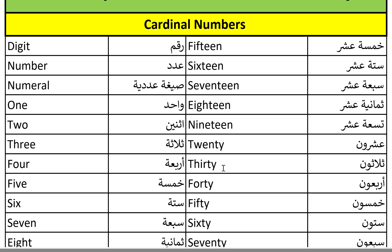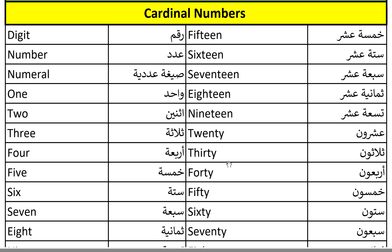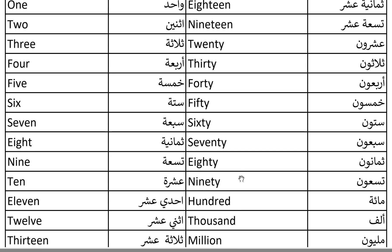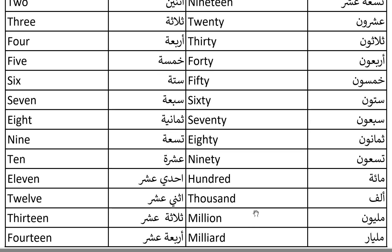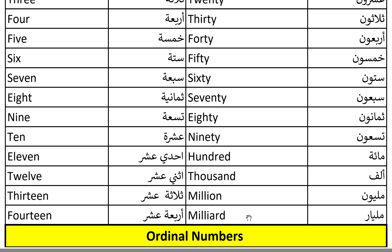Thirty, thirty. Forty, forty. Fifty, fifty. Sixty, sixty. Seventy, seventy. Eighty, eighty. Ninety, ninety. One hundred, one hundred. One thousand, one thousand. Million, million.